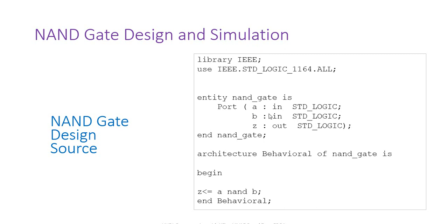This main source has a library and an entity with A and B as inputs and Z as output in standard logic. In the architecture we have: Z <= A NAND B — this is the NAND logic implementation in the source.